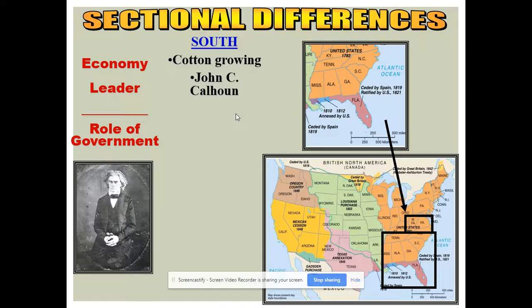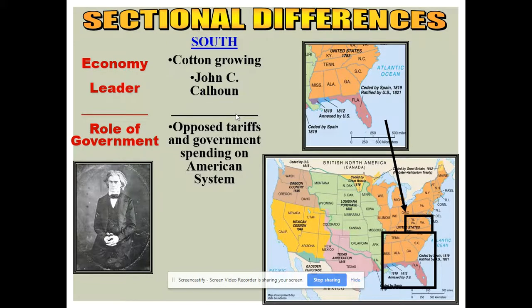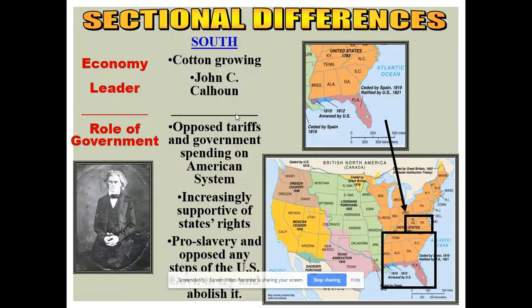In the South, John Calhoun was the prominent political leader. Cotton was the major cash crop — it had been tobacco, but cotton dominated. Slavery was central, with enslaved people increasingly sent to the Deep South. Southerners didn't like tariffs because they wanted goods as cheap as possible, didn't like government spending on the American System, were strong on states' rights — which became one cause of the Civil War — and were pro-slavery.